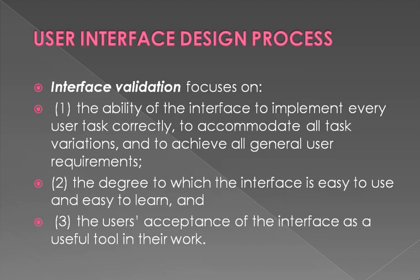After construction, the next phase is validation — that means checking. Validation needs to focus on three important things. The first is the ability of the interface to implement each and every user task correctly. For example, take a registration page: if there is a field called 'age,' the value should be a number. If a user enters a word format for age, the system needs to immediately validate it, because as per the client requirement the age should appear as a number. User acceptance must match the design.